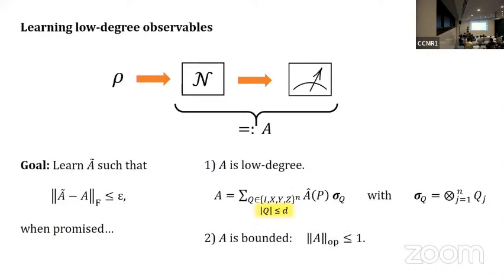Another promise we'll have is that A is bounded by a constant. We're interested in observables that don't run away in energy as the number of qubits grows larger. Under these conditions, recently there's been a flurry of effort. I'll briefly go over the setup and how it's related to classical learning.